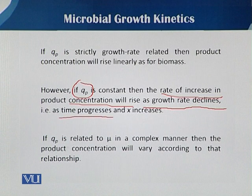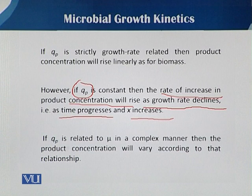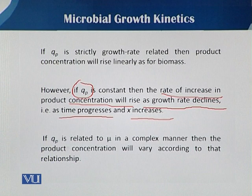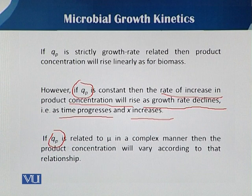As time progresses and x increases, we can easily understand how the product quotient or rate of product formation is affected by x. If qp is related to the specific growth rate mu in a complex manner, then the product concentration will vary according to that relationship.